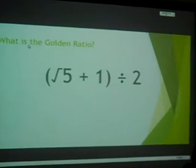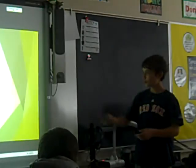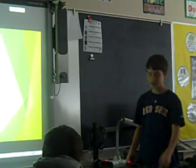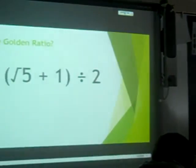What is the golden ratio? The golden ratio is the square root of 5 plus 1 divided by 2. It's kind of like the perfect number, basically.